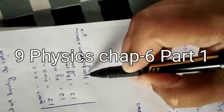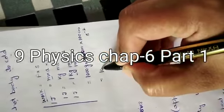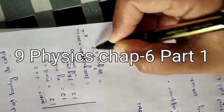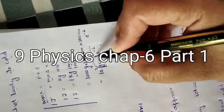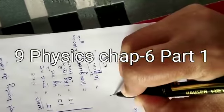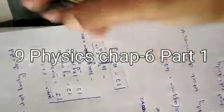So, count the zeros. 1, 2, 3, 4, 5, 6 and 7. So, it becomes 10 raised to power 7 gram centimeter square per second square. So, this gram centimeter square per second square is known as erg. And hence, 1 Joule is equals to 10 raised to power 7 erg. So, this is the relation.